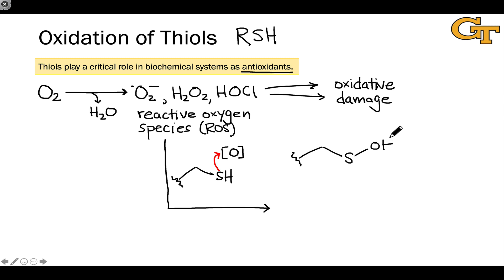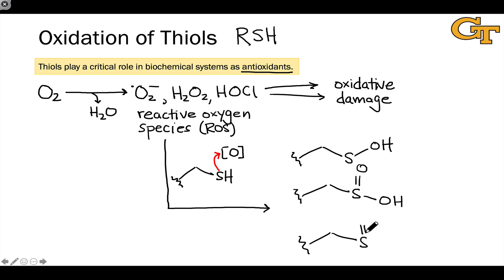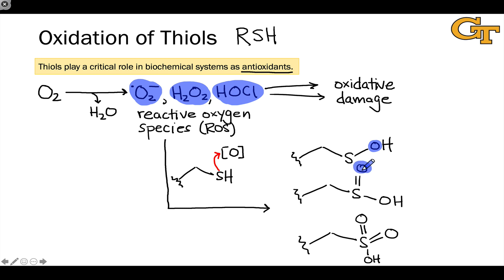The resulting oxidized products are different types of acids containing S-O bonds. For example, we have sulfenic acids with an S-O single bond, sulfinic acids with an S=O double bond and a separate S-OH group, and sulfonic acids with two S=O double bonds and an OH group. These oxidation reactions incorporate the problematic ROS into the active sites of enzymes where they can be held until some other reducing agent comes along and transfers the oxygen further, ultimately reducing it to water.